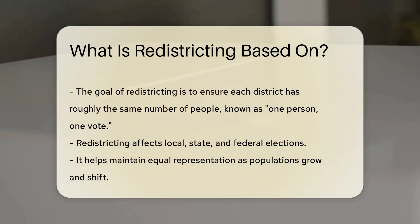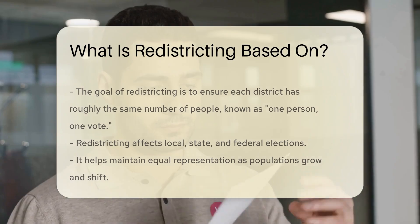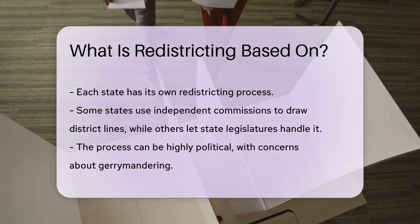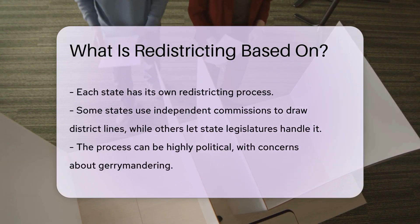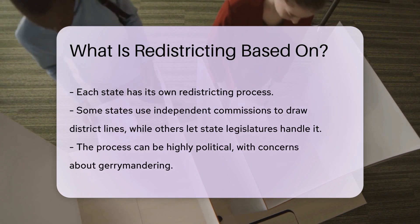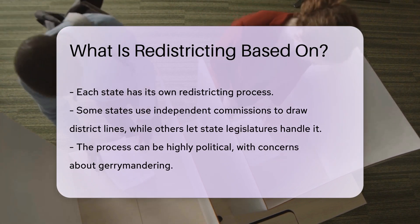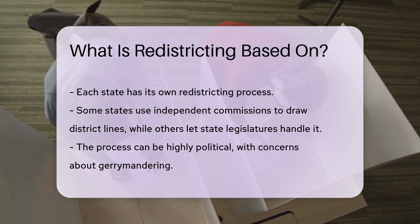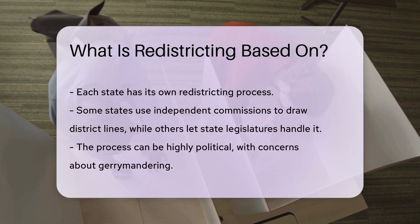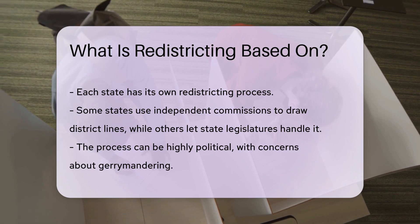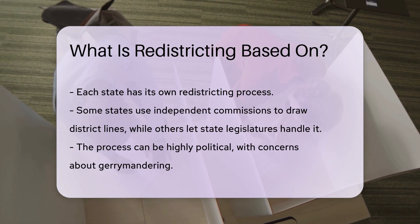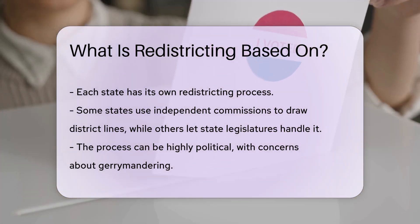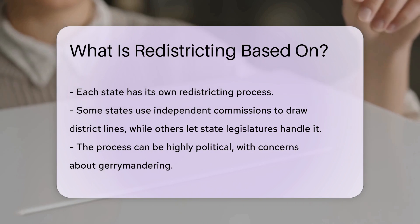Each state has its own redistricting process. Some states use independent commissions to draw the lines. Others let state legislatures handle it. The process can be highly political. Gerrymandering is a concern, where boundaries are drawn to favor a particular party. Courts can intervene if districts are deemed unfair.